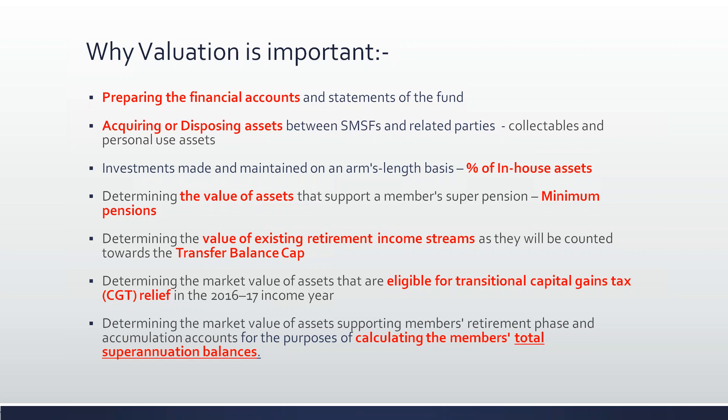ASX listed shares are also exempt and market value can be determined easily, although there's some scope for manipulation with off-market transfers by choosing dates between dividend payment dates. There was discussion about whether off-market transfers should be disallowed, requiring share sales to a super fund to go through a broker. Business use property can also be sold to the super fund, and residential properties owned via a fixed unit trust may also be transferable under certain conditions.